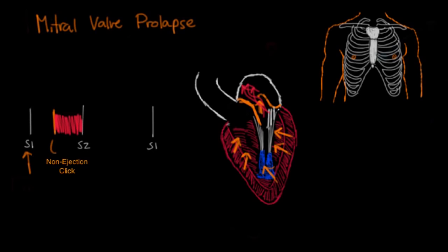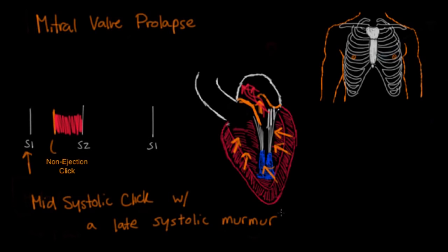Some textbooks show this as a flat murmur and others say it's a crescendo murmur. For our purposes, we're not going to dwell too much on the shape of the murmur following the click. What's important is the click itself, because a mid-systolic click is virtually diagnostic for mitral valve prolapse. Overall, this is described as a mid-systolic click with a late systolic murmur, heard best at the apex or the mitral area.